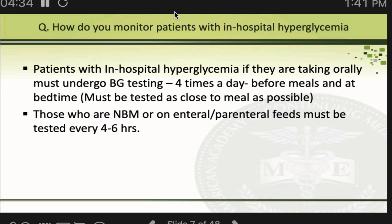A common question is why we check before meals and bedtime rather than post-meal. When a patient is hospitalized, they get standard meals three times a day. If fasting sugar is normal but post-breakfast sugar goes up, that is reflected in the pre-lunch sugar — so you do not need to separately check post-breakfast. Similarly, if post-lunch sugar is high, it will be reflected in pre-dinner. So checking pre-meal and bedtime captures the hyperglycemia load effectively.